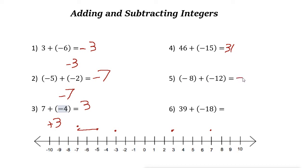Next: negative 12 plus negative 8. These two have the same sign, so add them up: 12 plus 8 is 20, and the answer is negative 20. Finally, 39 plus negative 18. These two have different signs, so find the difference: 39 minus 18 is 21. The bigger number is 39 and it is positive, so the answer is positive 21.